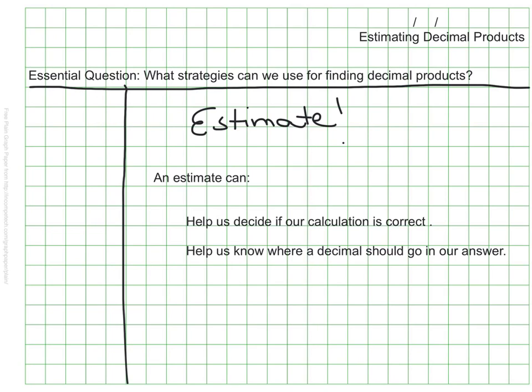We'll do a couple quick estimates here just to get in the habit of doing estimates as we're working with multiplying decimals. I'll start with 0.9 times 3.4. When I look at this, I know that 0.9 is really close to one whole.